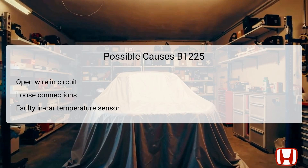There are several potential causes for DTC B1225 that must be considered during troubleshooting. An open wire in the circuit indicates a break or disconnection that prevents proper electrical flow between the in-car temperature sensor and climate control unit. Loose connections can also be a culprit, as they may lead to intermittent communication between these components. Additionally, a faulty in-car temperature sensor itself could trigger this code if it fails to perform its intended function. Thorough inspections of the wiring, connectors, and sensor are essential to determine the exact cause and to address it efficiently.